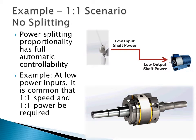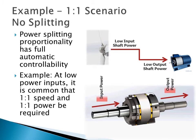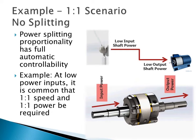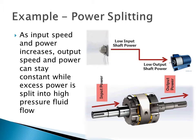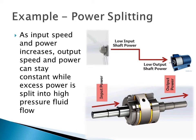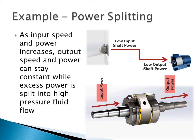The following animations explain the functionality of this Mathers power split coupling. In a 1-to-1 ratio scenario, if all input shaft power is to be transferred to the output shaft in a 1-to-1 ratio, then no power splitting occurs. Alternatively, with an increase in rotational speed and power applied to the input shaft, instead of wasting this excess input power, we can split it to a high pressure hydraulic flow and transfer it to another use or to a storage vessel.